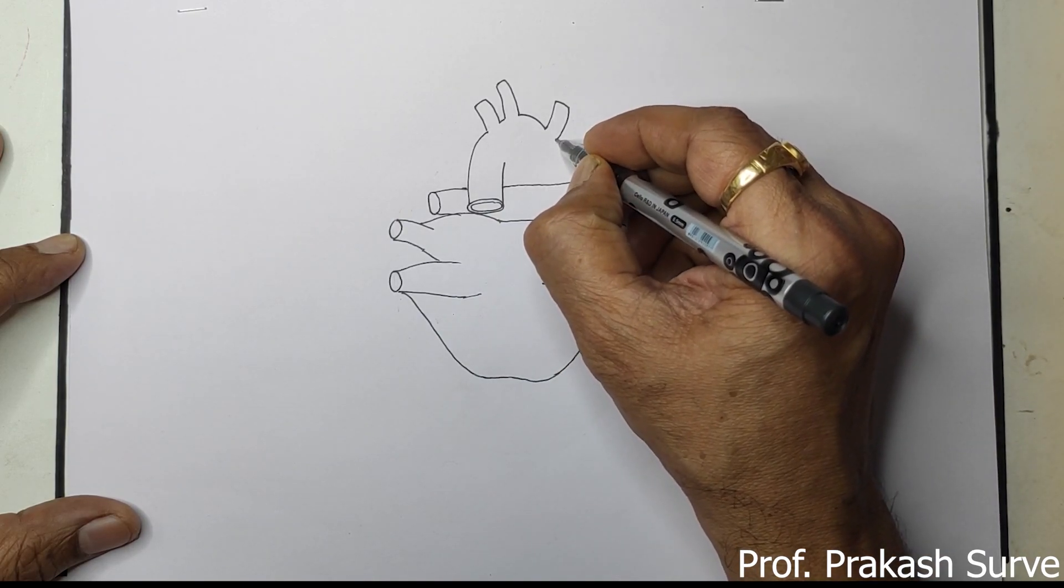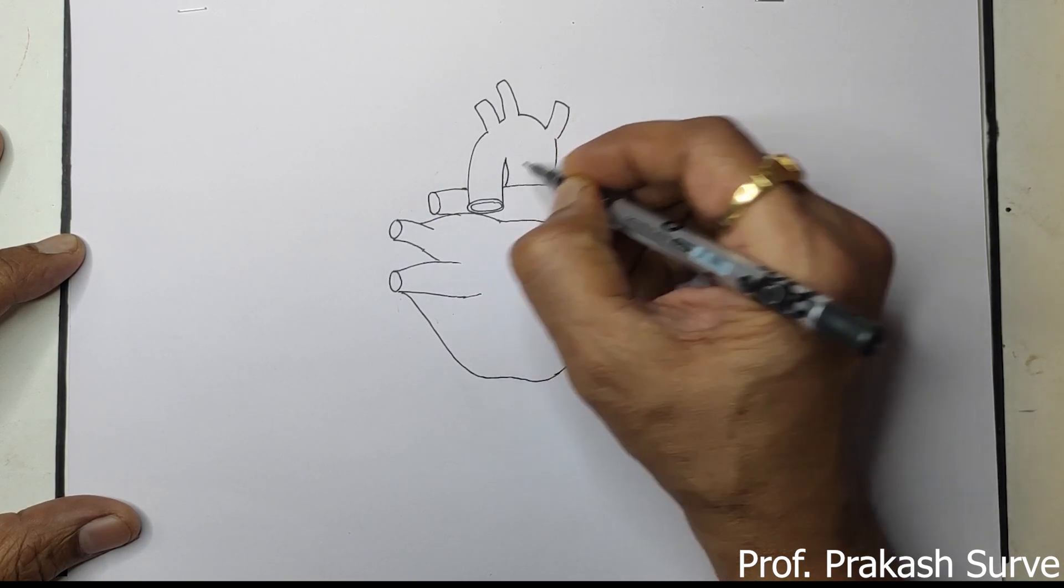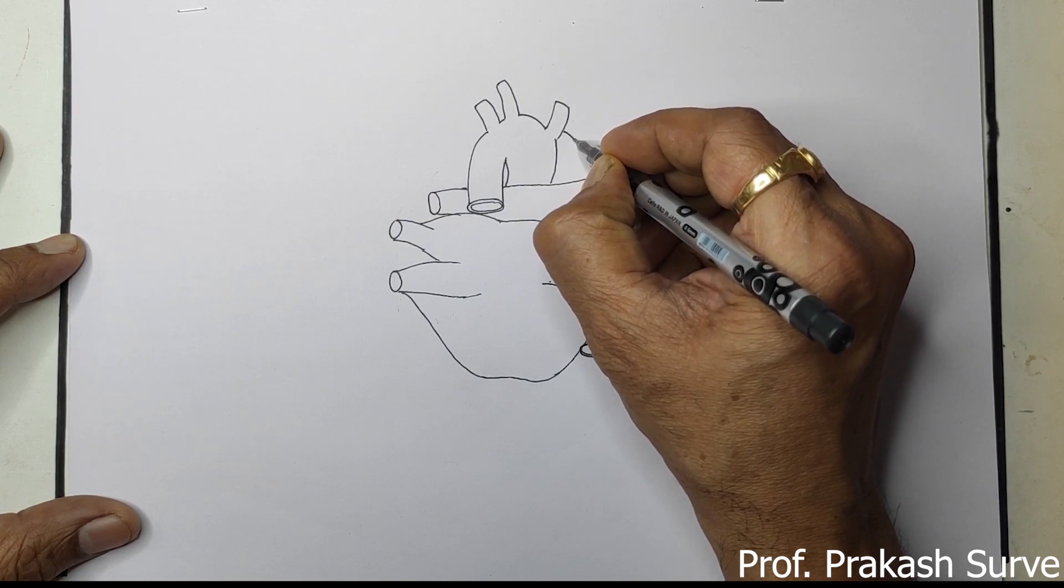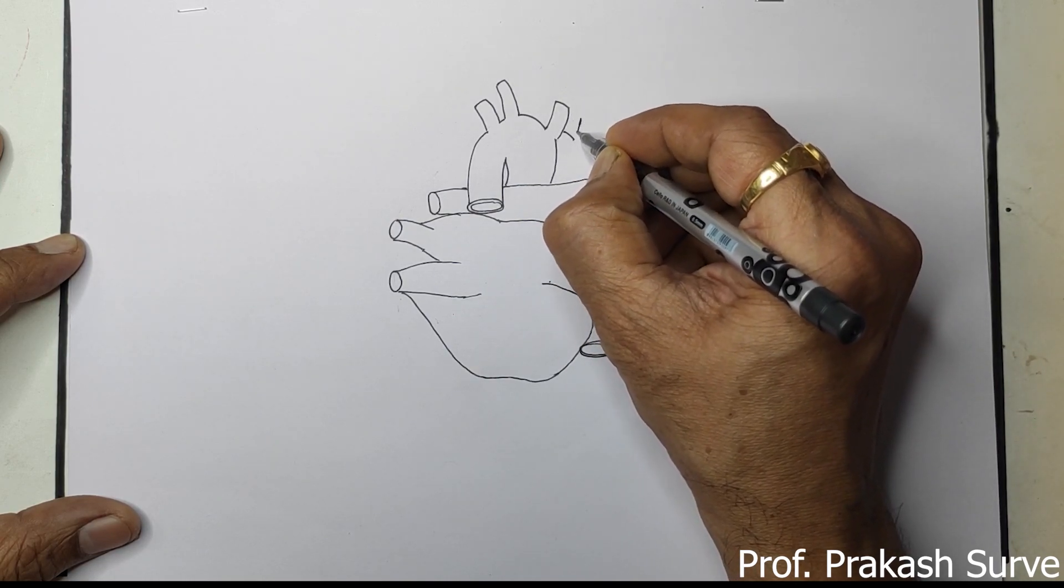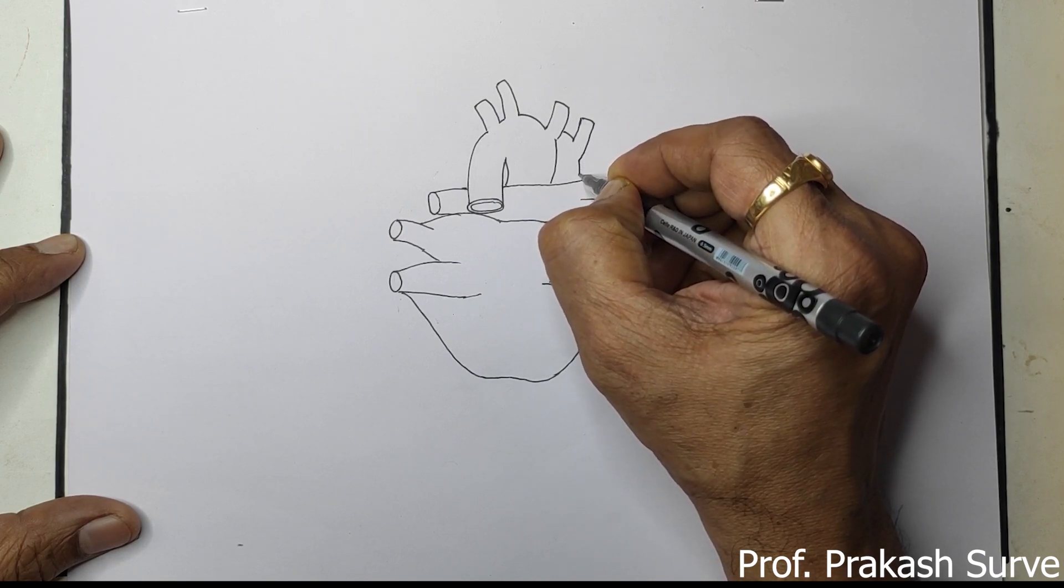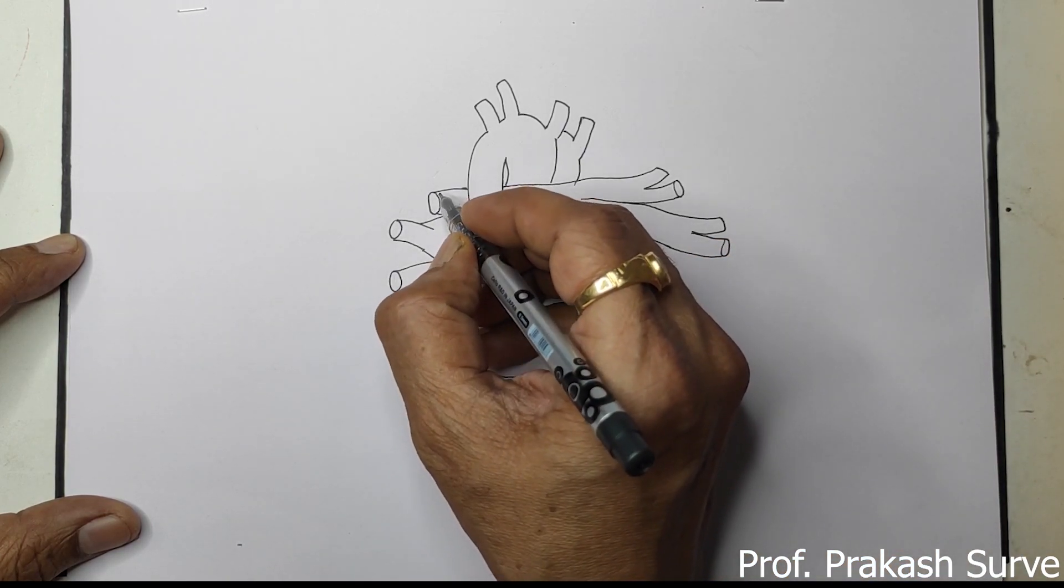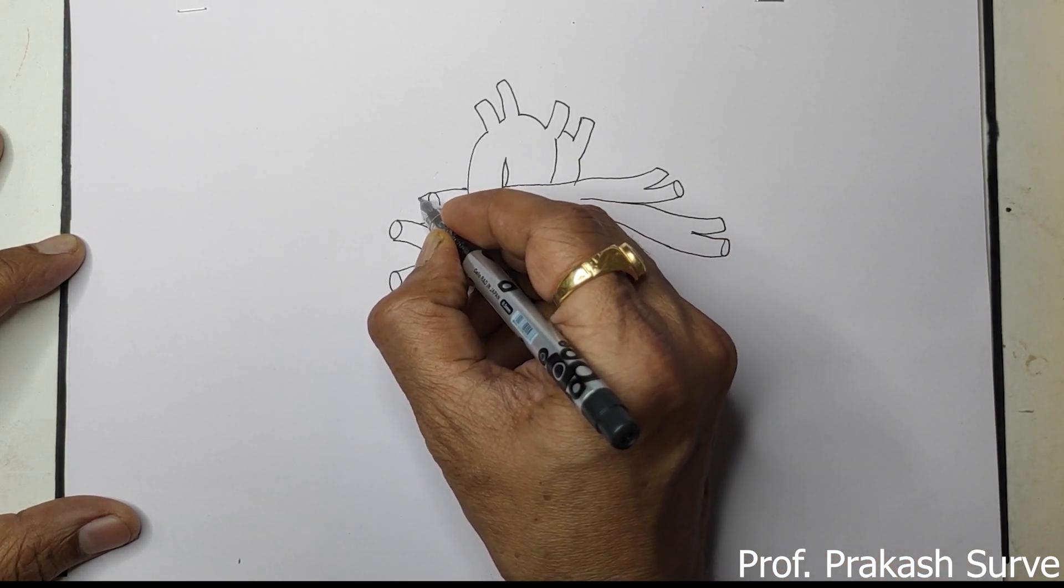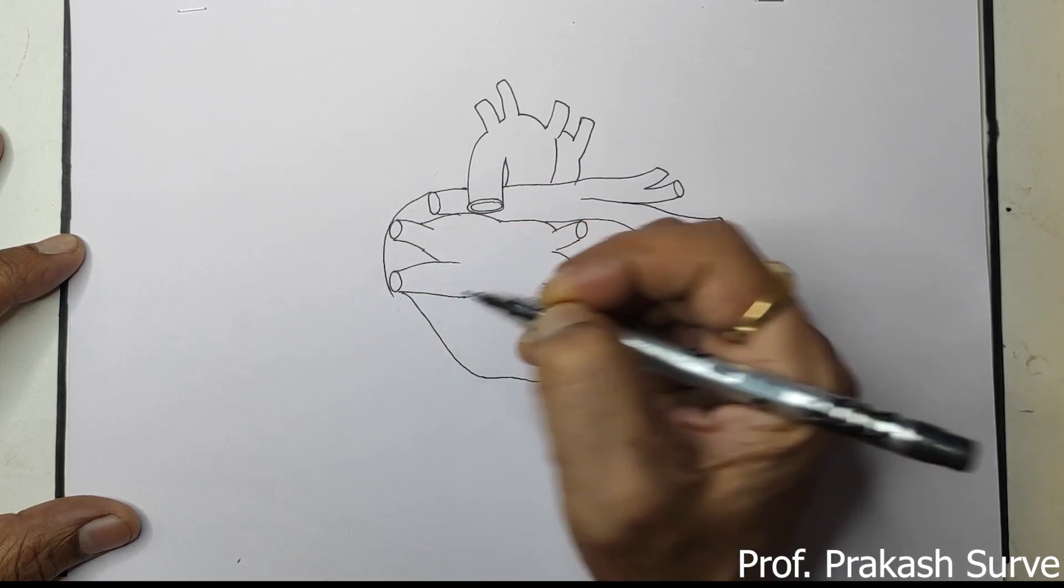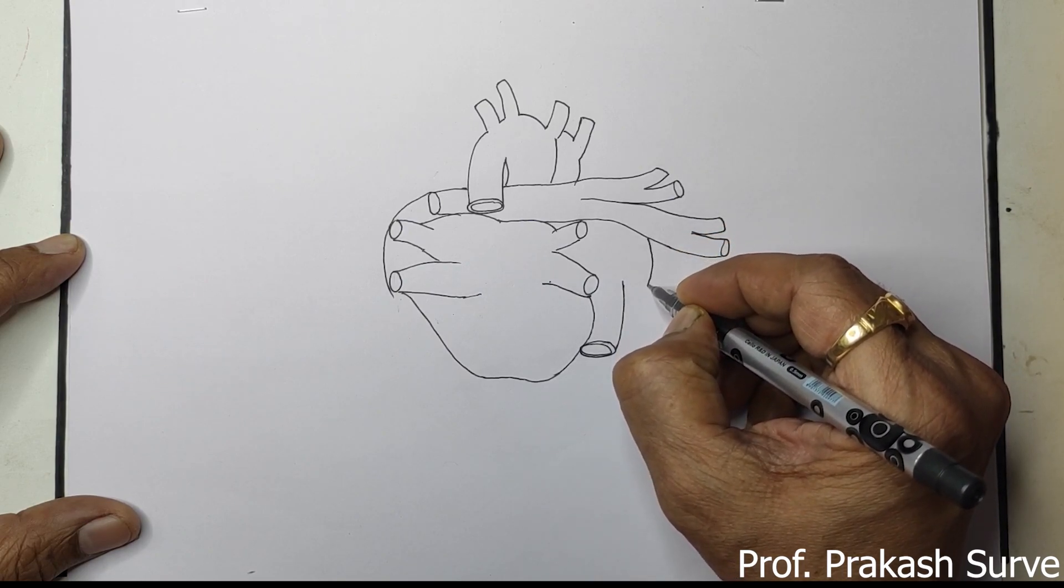Now this line will bring it down. Here we have to draw the superior vena cava. Now next from here, bring this line downward, and from here also.